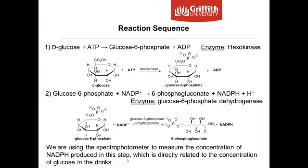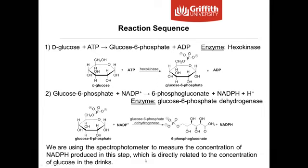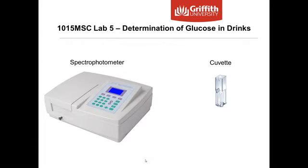The way we're going to determine glucose concentration is by measuring the NADPH that is produced, which is directly related to the concentration of glucose in the drinks. We can measure the NADPH produced using a spectrophotometer, which looks something like this — it's a machine you'll have on your bench. You'll be placing liquid samples in a cuvette, placing the cuvette inside the spectrophotometer, and then recording the absorbance readings.